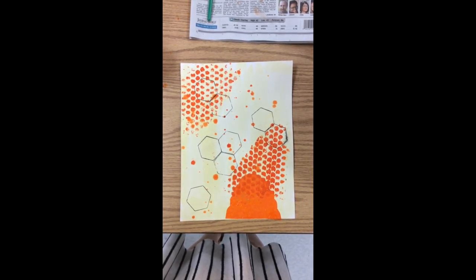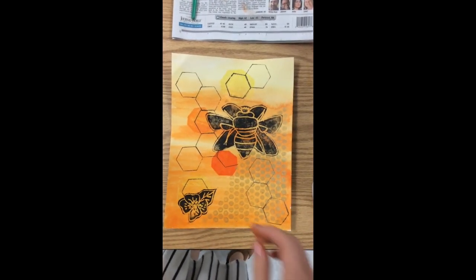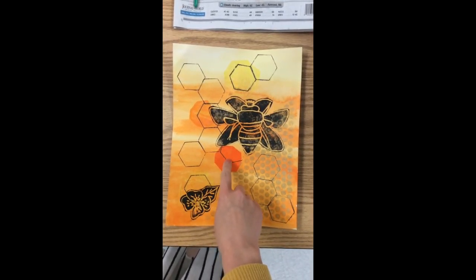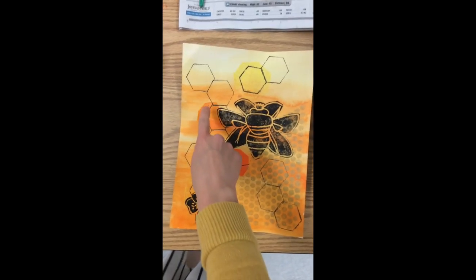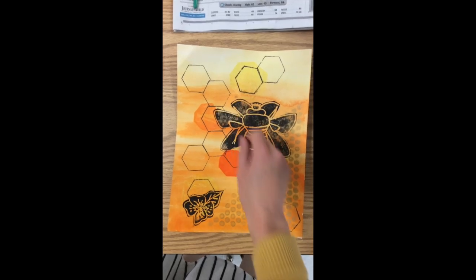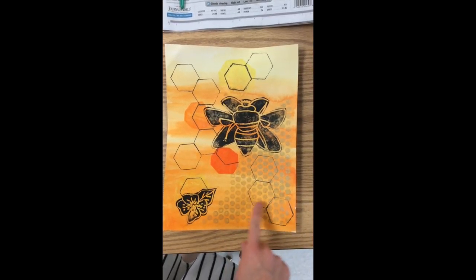And there's my background. Later we'll be adding to this project, but for now we have the background. And here is another option. Again, this one I use the tissue paper, the bubble wrap, the stamps, just in a different way. So you have lots of options.